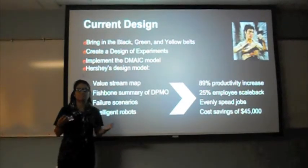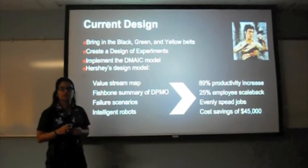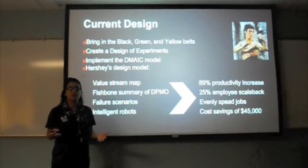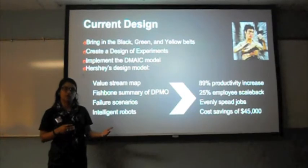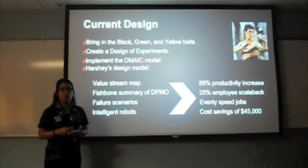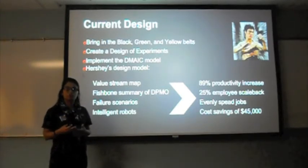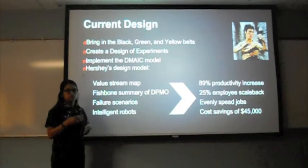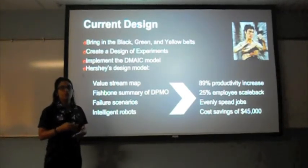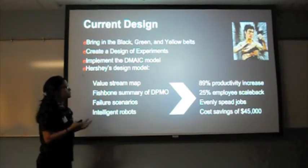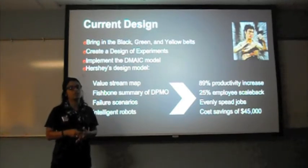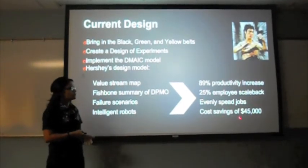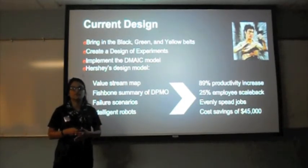Hershey made available their Six Sigma design in many of their factories. According to an article from Inbound Logistics, Amy Partridge reports that Hershey created a value stream map for each manufacturing step. The goal was to eliminate tasks that are not essential and to outline time goals for essential tasks. A fishbone diagram summarizing the DPMO was calculated for each function in the factory. The next step was a cause-and-effect matrix to look for variability, followed by a failure scenario analysis. To ensure continuation of improvements, intelligent mobile robotic driving units were introduced to the factory. Within four months, Hershey saw an 89% increase in productivity. To make the factory leaner, there was even a 25% scale back of employees; however, it currently saves Hershey $45,000 a year in labor and current jobs are evenly spread.